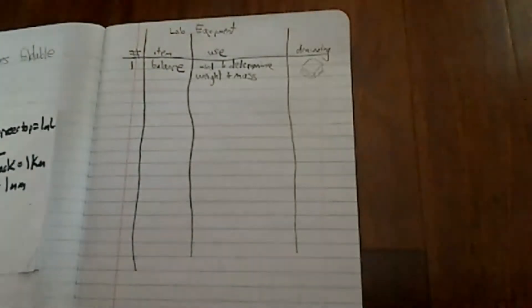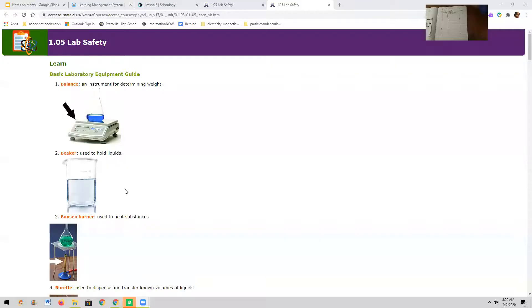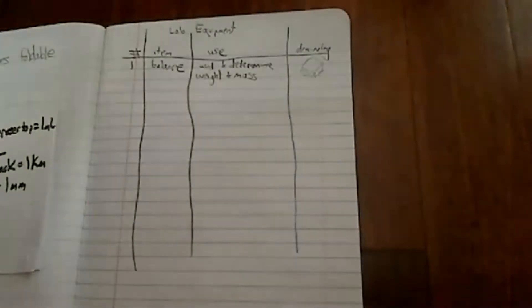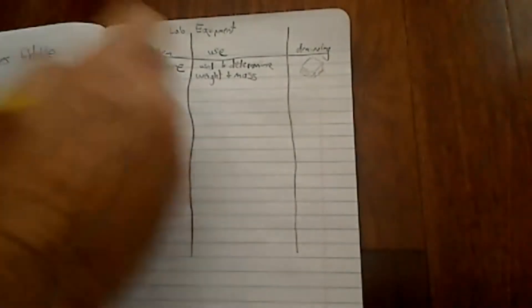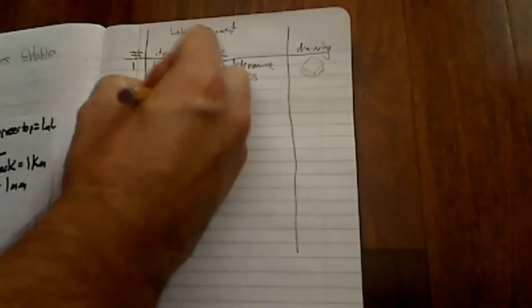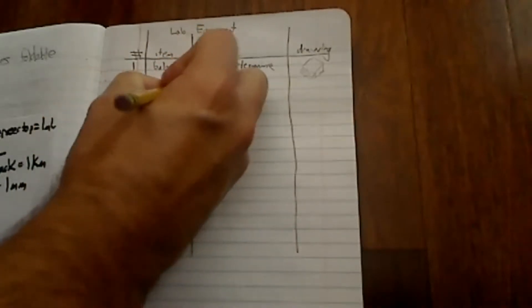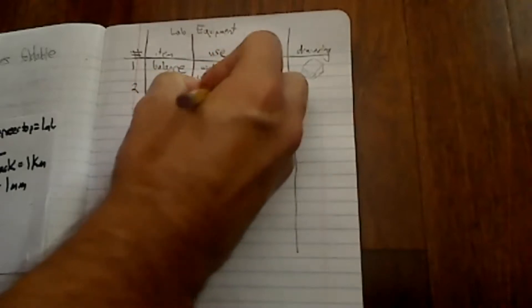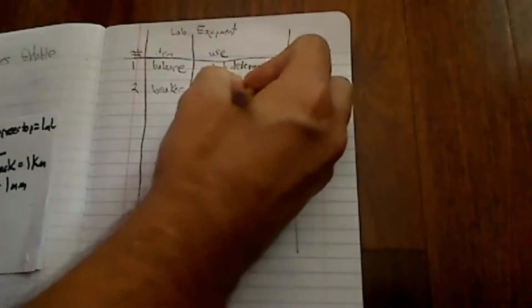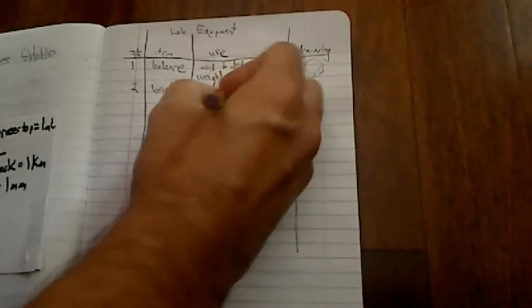Then we're going to do our next one. And so I'm going to share my screen again. Beaker used to hold liquids. So let me do number two. Beaker, used to hold liquids and measure volume. You actually use it to measure volume of liquids and granulated solids.